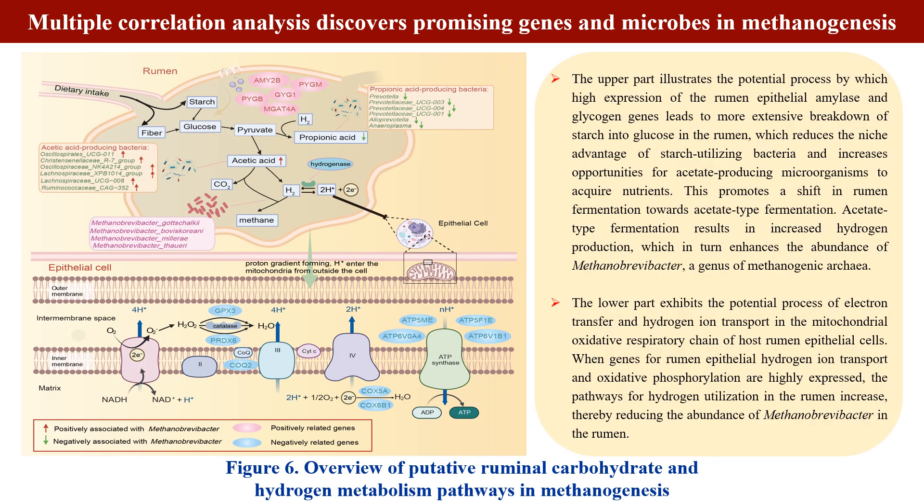From our multiple correlation analyses, we found that several host rumen genes enriched in the starch and sucrose metabolism pathway were positively related to acetic acid-producing bacteria and methanogens. High expression of rumen epithelial amylase and glycogen genes leads to a shift in rumen fermentation towards acetate-type fermentation, which increased hydrogen production and in turn enhances the abundance of Methanobrevibacter.